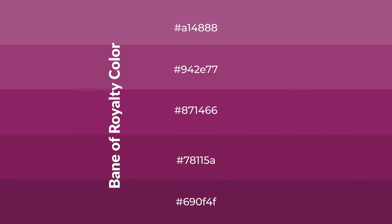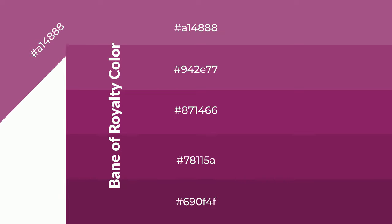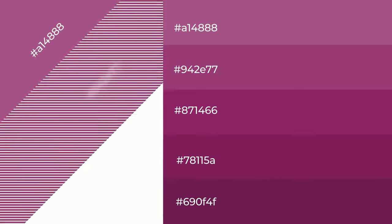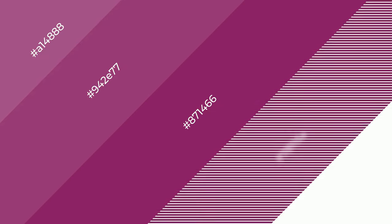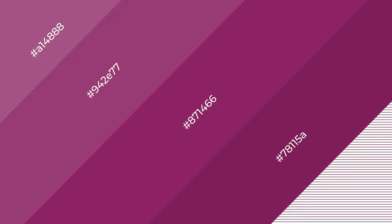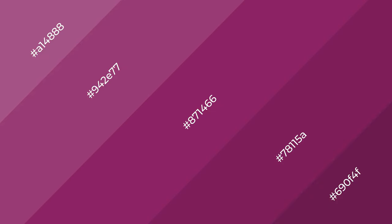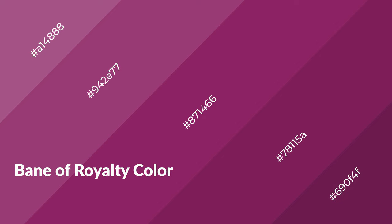To generate shades of a color, we add black to the color, and it is used in patterns and 3D effects. Layers and shades create depth and drama. Bane of royalty is a warm color and it emits cozier and active emotions.